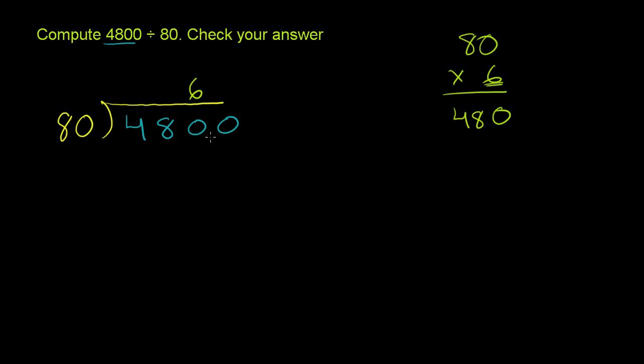Because we're only considering the 480, we put the 6 right in 480's one spot, which is really the 10's place. But if you just think about the 480, it's right above the 0. Now, 6 times 80 is, we already saw, 480. And then we can subtract, and we get 0. And we bring down another 0. 80 goes into 0 how many times? Well, it goes into it 0 times. 0 times 80 is 0. You subtract, you get 0's. And there's nothing left to bring down, so we're done.